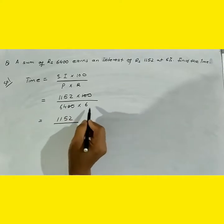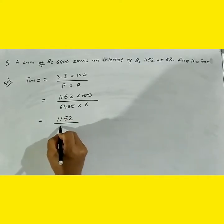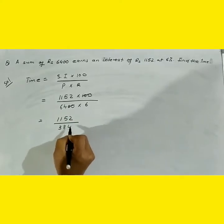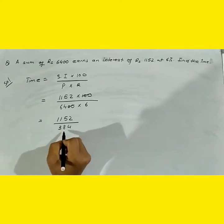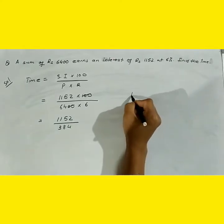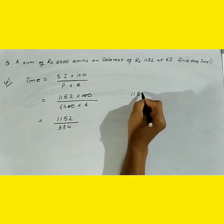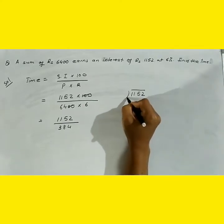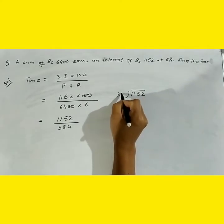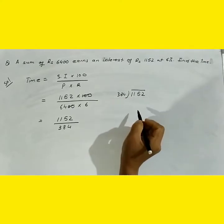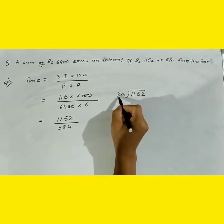64 times 6 equals 384. Now we need to divide 1152 by 384.